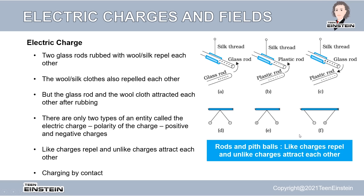These are all things that happen due to electric discharge. Electrostatics is the study that deals with forces, fields and potentials arising from static charges. There are only two types of electric charge — we can call them the polarity of the charge. One is positive and another is negative. Like charges repel each other and unlike charges attract each other.